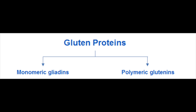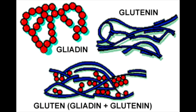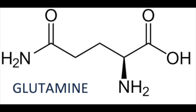Gluten can be separated into two broad classes: the gliadins and the glutenins. A typical wheat variety can have up to 40 different gliadins, whose molecular weights are generally between 28,000 and 55,000. The glutenins can have an overall molecular weight exceeding two million due to their multi-protein macropolymer structure. Glutens, which are insoluble, are dominated by hydrophobic amino acids, glutamine in particular.